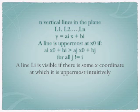We say line Li is uppermost at a given x coordinate x0 if its y coordinate at x0 is greater than the y coordinates of all the other lines at x0. That is, ai times x0 plus bi should be greater than aj times x0 plus bj for all j which is not equal to i.